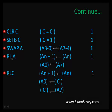Rotate left (RL A): you can rotate left in the accumulator. Whatever content is in bit 7, it will be moved to bit 0 — that is, A7 to A0. The bit-by-bit operation is done in rotate. For RLC (rotate left with carry): initially carry is 0, bit 7 is moved to carry, and the carry bit is moved to bit 0 of the accumulator.